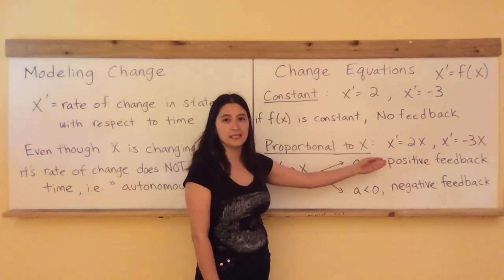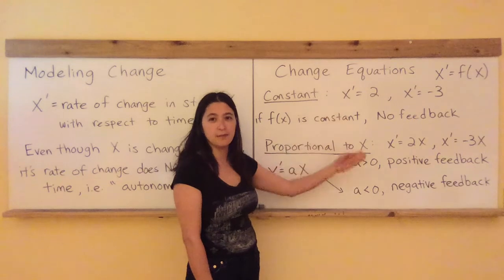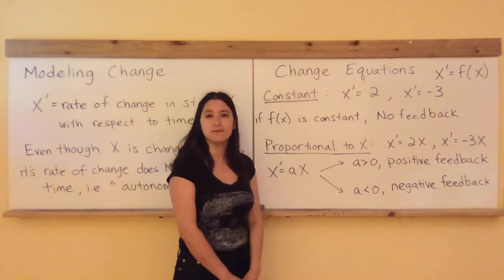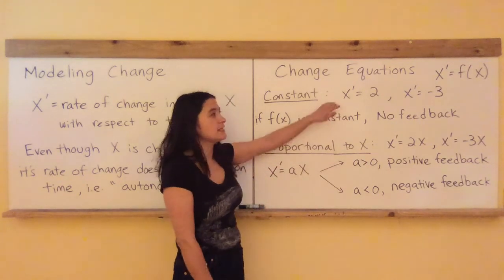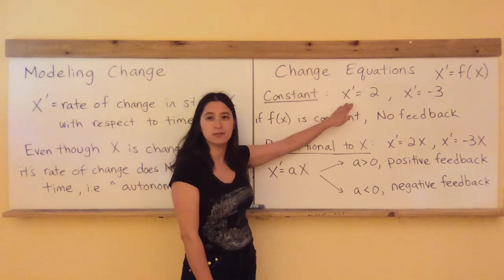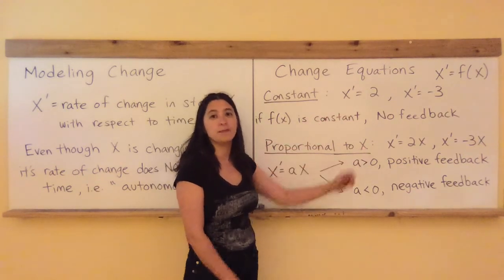I kind of made these examples similar to the constant example, but hopefully you can see the difference. The difference here is that this is just equal to a constant number 2, and this is equal to 2 multiplied by X, and that's why it's called proportional to X.